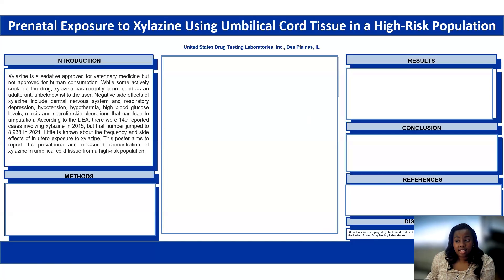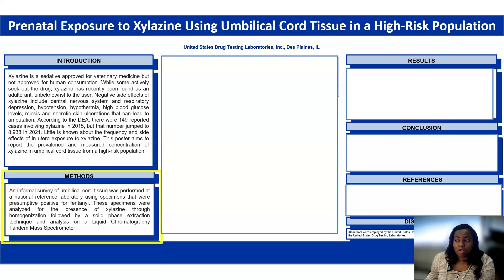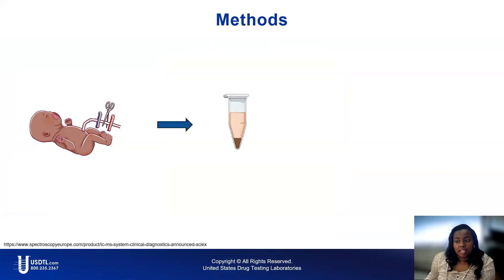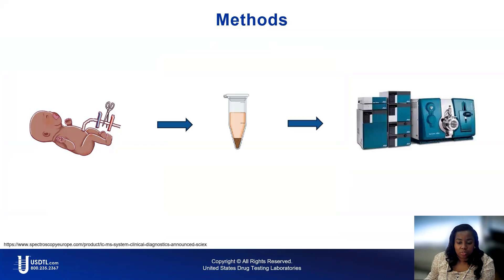Considering the extensive toxicology effects and nationwide prevalence in post-mortem lab results, we developed a method to detect xylazine in the vulnerable population of newborns. An informal survey of umbilical cord tissue was conducted using specimens that were presumptive positive for fentanyl. These specimens were analyzed for the presence of xylazine through homogenization, followed by solid phase extraction, and analyzed using liquid chromatography tandem mass spectrometry.